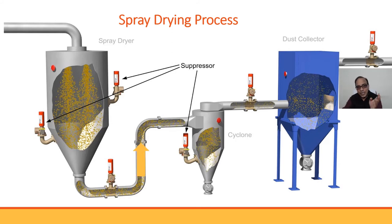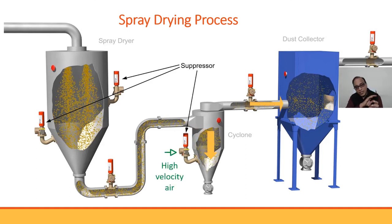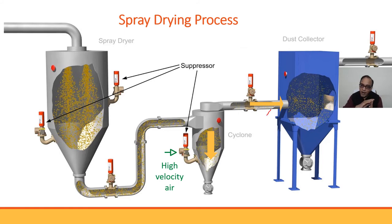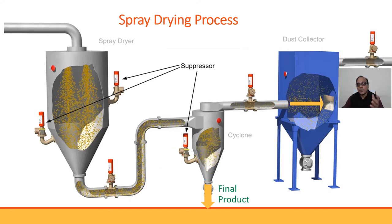The feed moves towards the cyclone separator and enters it. Due to the high velocity of air inside, the fines are taken away with the high-velocity air and directed towards the dust collector. The final product is collected at the discharge outlet of the cyclone separator, and the fines are collected by the dust collector.